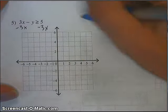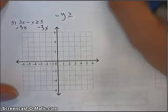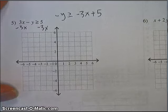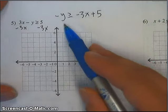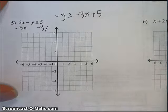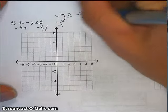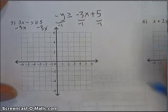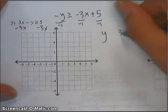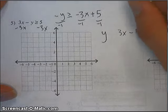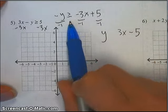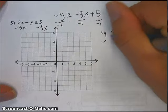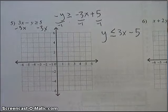And that would leave me with negative y is greater than or equal to negative 3x plus 5. Now, that y is not by itself because we have a negative in front of it. So I'm going to divide everything by negative 1. And then ultimately, that leaves me with y and positive 3x and negative 5. What happens to this inequality when you multiply or divide by a negative? Well, it flips. This is actually y is less than or equal to 3x minus 5.